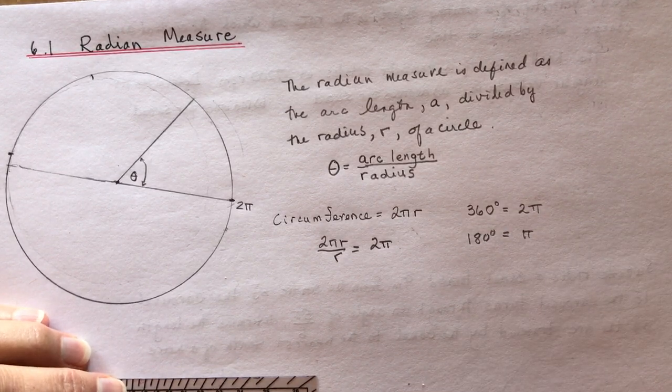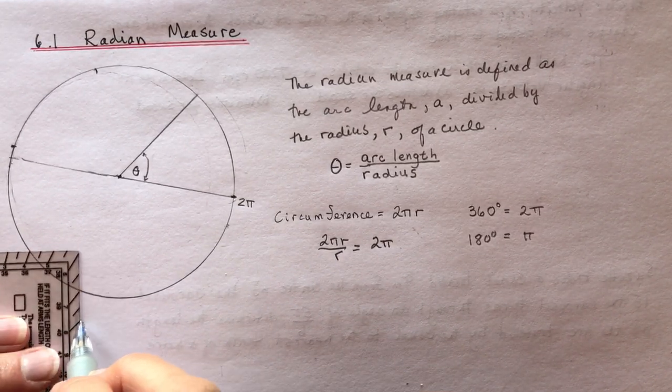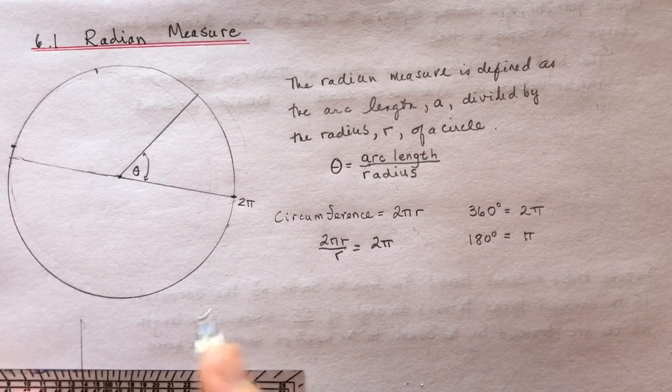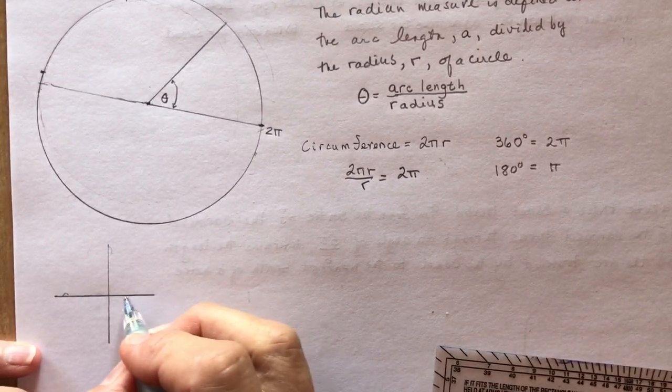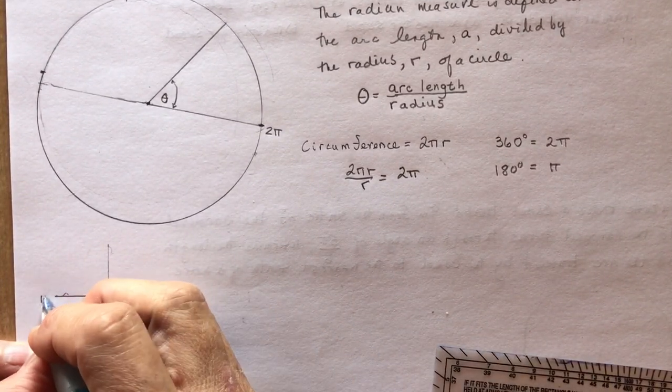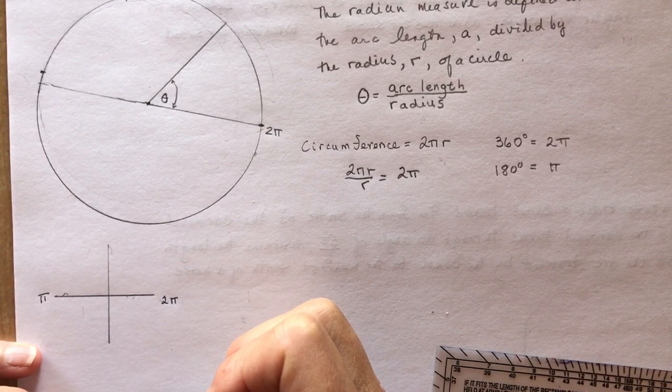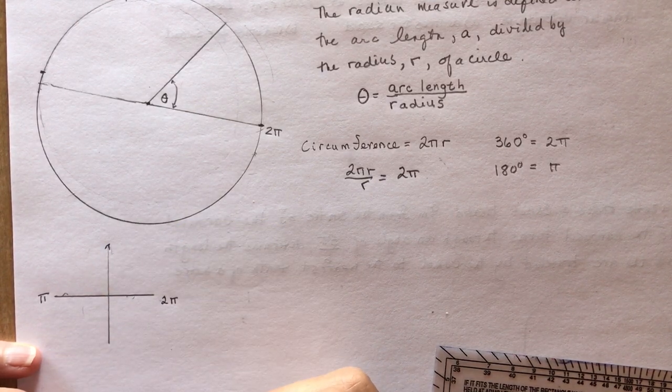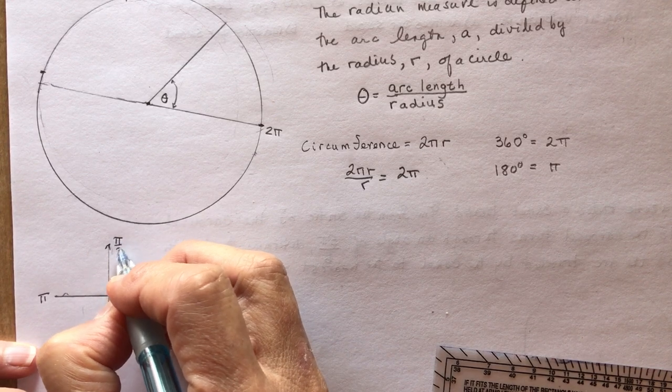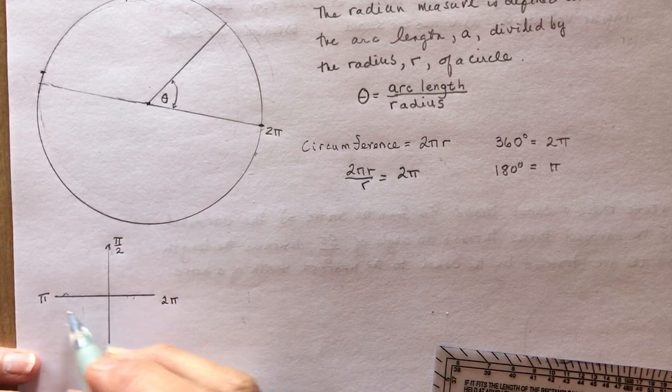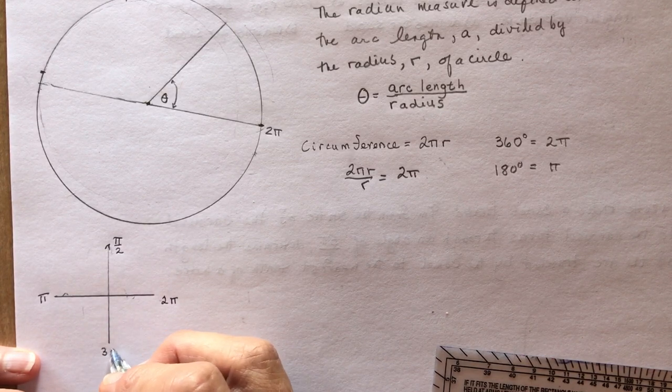So now we have all these measures on our circle. If we go around in terms of radians, from here to here is π radians. And all the way around would be 2π radians. So how far is it to 90 degrees? It's going to be half of π, right? So this is going to be π/2. And how far is it to 270 degrees? Three π/2.